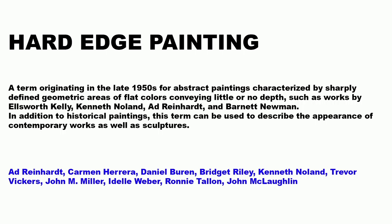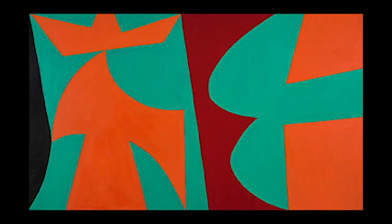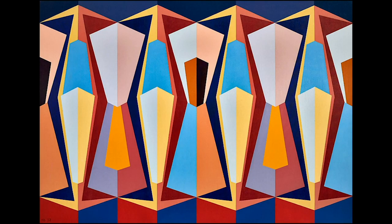Hard edge painting is a term originating in the late 1950s for abstract painting characterized by sharply defined geometric areas of flat colors conveying little or no depth, such as works by Ellsworth Kelly, Kenneth Noland, Ad Reinhardt, and Barnett Newman. In addition to historical paintings, this term can be used to describe the appearance of contemporary works as well as sculptures.